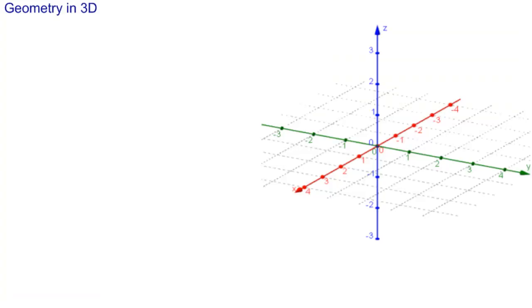In this, our very first MathCast on Geometry in 3D, we're going to be looking at the two very basic entities of three-dimensional space, that is, a point and a vector.